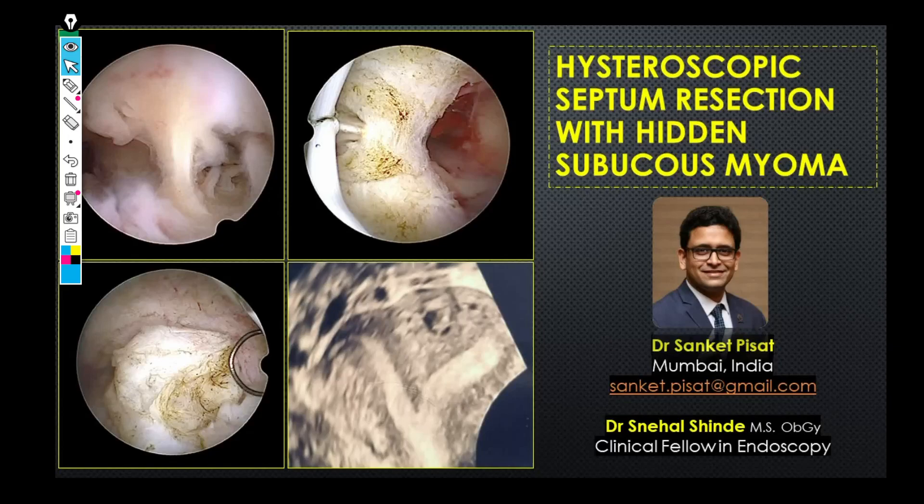Hello everyone, this is Dr. Sanket Pisaat and today's case that we are going to be discussing is a very interesting case of a hysteroscopic septal resection with a hidden submucous myoma deep within the substance of the septum. So it is two surgeries in a single surgery.